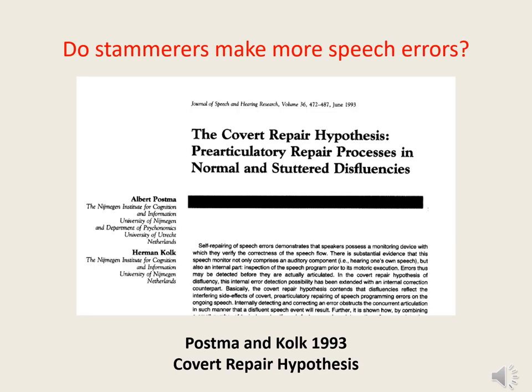Everyone engages in a certain amount of error repair and error avoidance behaviour when speaking to other people, and most of the time such behaviour doesn't significantly interfere with the fluency of their speech. However, if a person's prone to making a lot of speech errors, or if he's slow at reformulating what he wants to say when he notices an error, it's likely that such covert error repair and avoidance behaviour will interfere much more with his speech production, and make him substantially more disfluent.